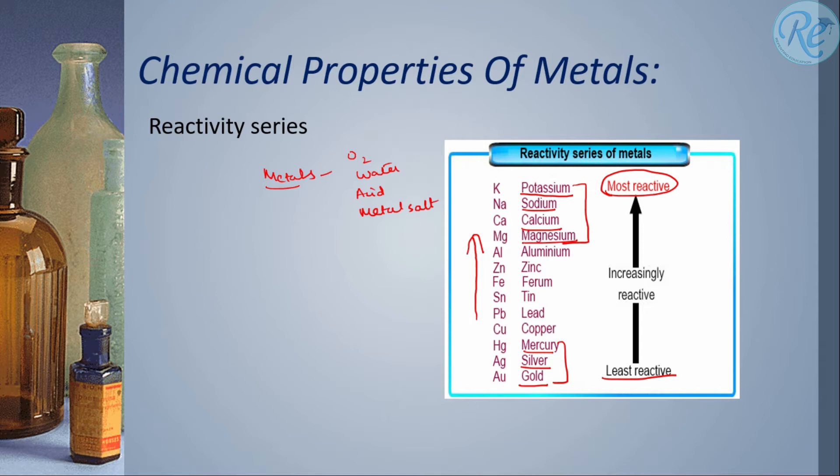So they don't generally react with anything while these ones in the middle are mild, not so strong, not so weak as well. Now what happens when we react anything with silver or gold? We get no reaction. We get no reaction because they are the least in the reactivity series and they do not react with anything.